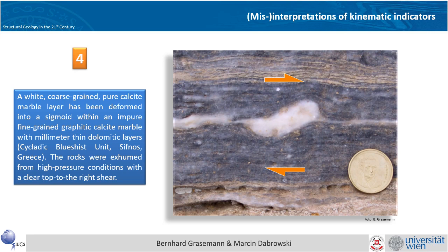The fourth example is from Siphnos, Greece, where you have impure marbles. In these impure bluish-gray marbles there is a layer which is more pure, recrystallized to a coarse grain size and therefore probably a bit more competent. It has been boudinated in pinch-and-swell geometries and makes a sigmoidal shape, giving you a nice top-to-the-right shear sense.